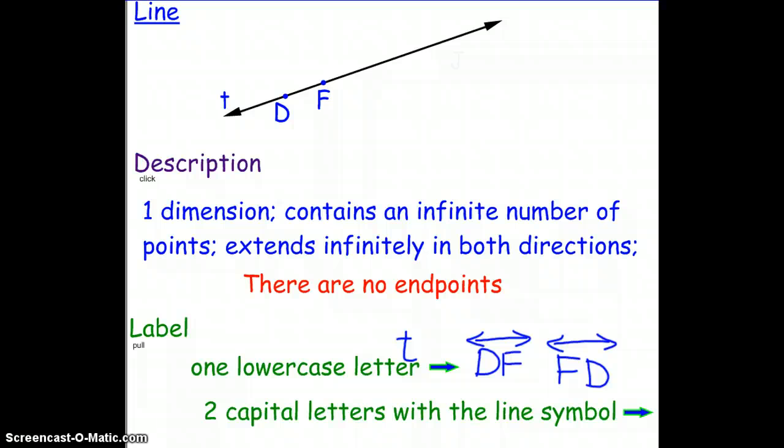So we have our one lowercase letter that would be T and then we have our other option of two capital letters with a line symbol. Now we know there's an infinite number of points on that line. So we could use other points in order to label this line. So if we locate a point and we call it J, we can now call this line DJ. Or we could call this line JF. And again, either of these last two options we could reorder those points. And the line is still referring to the same one at the top of your screen.